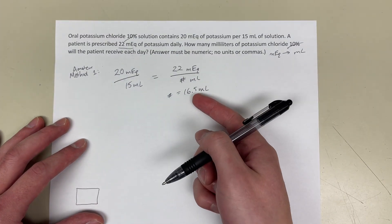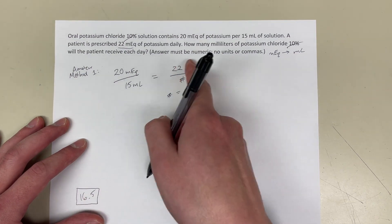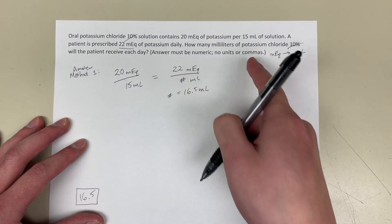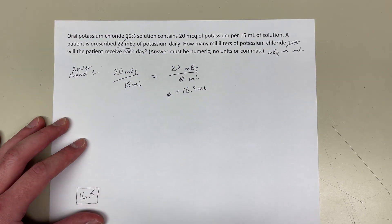So, that's the final answer, actually. And make sure when you put the final answer, it's just the number, because the prompt says numeric, no units, or commas. So, 16.5 is what you put in the computer and hit enter, and you got it right.